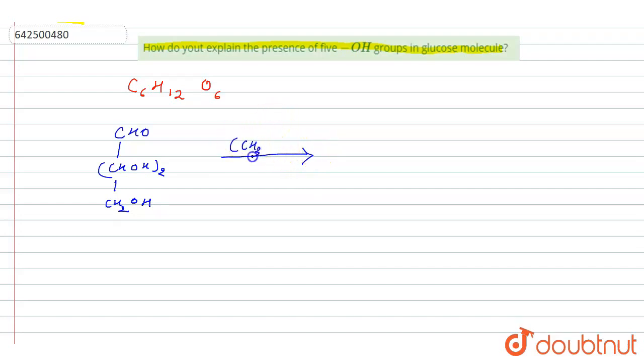When this reacts with acid anhydride, it forms glucose pentaacetate.